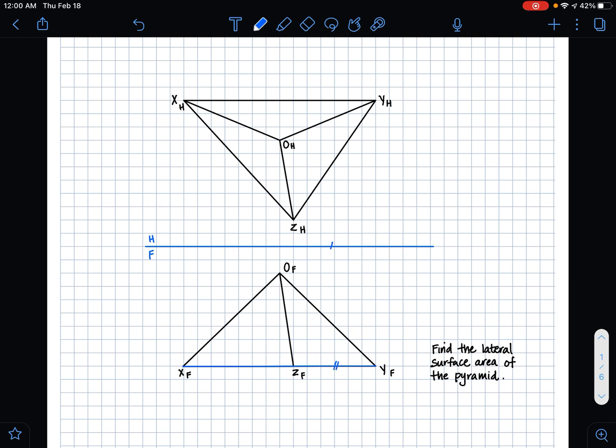So that means that all the points that make up the lines in our adjacent horizontal view are true lengths. So if we're talking about line XY, we can see that in our horizontal plane that XY is also parallel to our HF folding line, so this means that it's a true length.